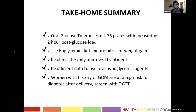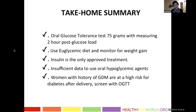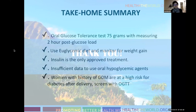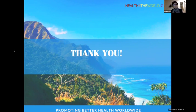The take-home points are: the 75-gram, two-hour oral glucose tolerance test is the standard for diagnosing gestational diabetes and should be done in all women between 24 and 28 weeks unless they have pre-existing diabetes. Use of a euglycemic diet and monitoring weight gain is very important. Insulin is the only approved treatment — oral medications are debated and not recommended due to insufficient data. Women with history of gestational diabetes are at high risk for diabetes after delivery and should receive a screening oral glucose tolerance test at six weeks postpartum. Thank you for your attention and please feel free to ask questions.